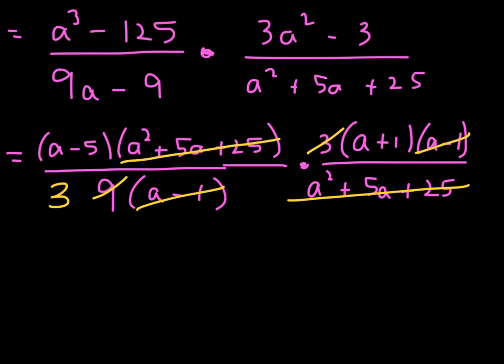Let's be very careful to collect whatever we have left. So A minus 5 in the numerator times A plus 1 all over 3. That's your final answer.